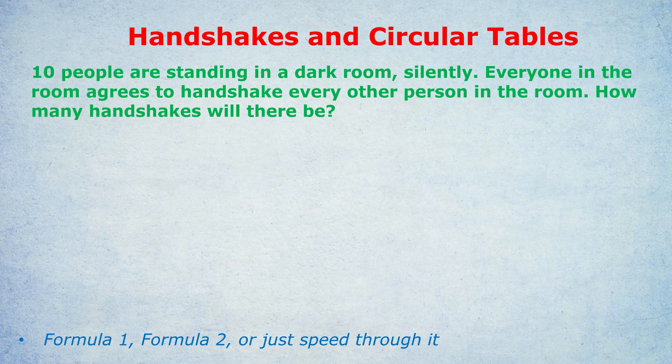I'm going to give you a choice. There is a particular formula we can use for specifically this type of scenario when each engagement is between two people or two objects. There's a formula for handshakes, or football matches where each team plays the other team. But I'm also going to give you a way that uses the combinatorics formula. As I've said down below, you've got formula one, formula two, or just speeding through it.